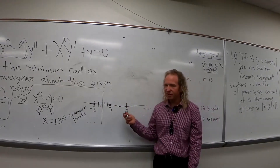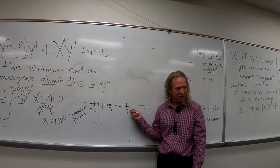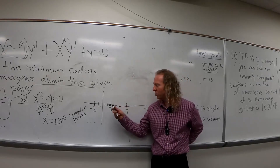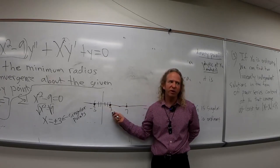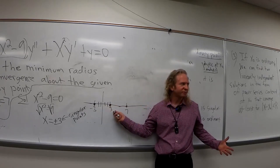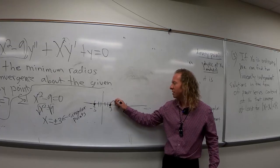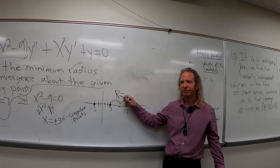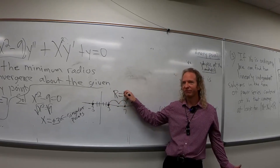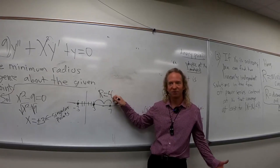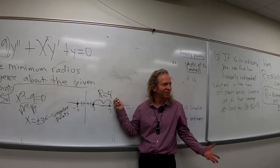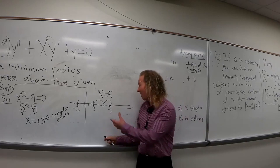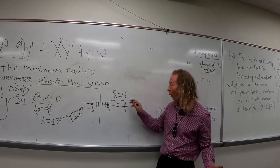R is the distance from the ordinary point to the closest singular point. Which one is closer — negative three or three? Three. So what would the distance be in this case? What would R be? Four, right? It's just four. How do you get from three to seven? It's just four.